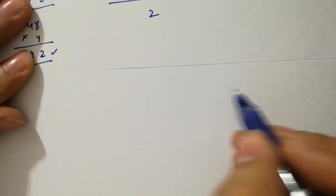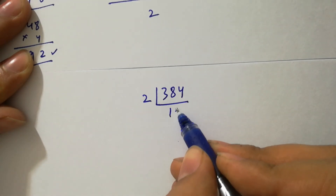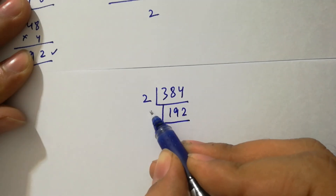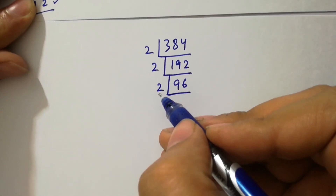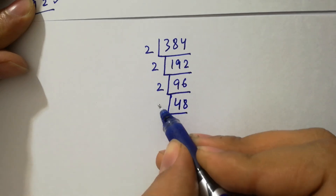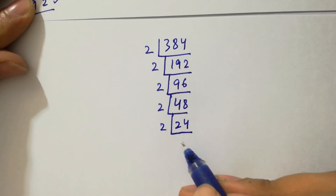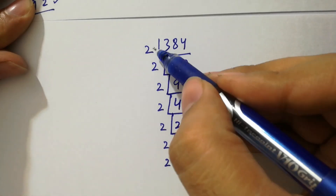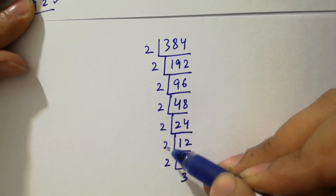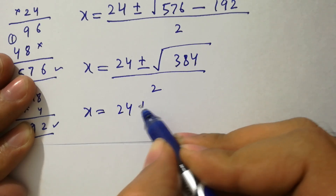Now let's factor 384. Dividing repeatedly by 2: 384 divided by 2 is 192, divided by 2 is 96, divided by 2 is 48, divided by 2 is 24, divided by 2 is 12, divided by 2 is 6, divided by 2 is 3. So we have 2 to the power 7 times 3. Therefore x equal to 24 plus or minus square root of 2 to the power 7 times 3, over 2.